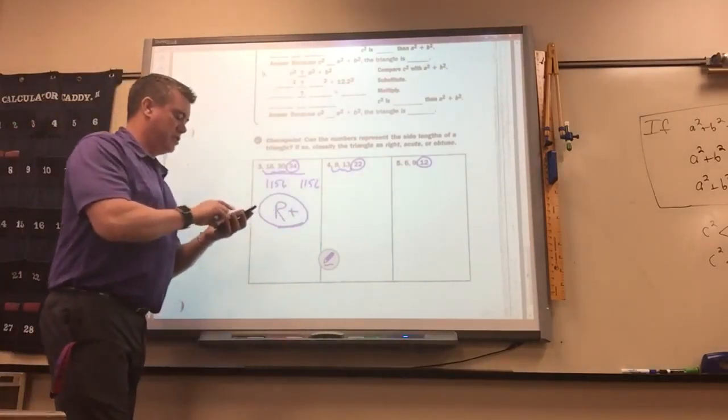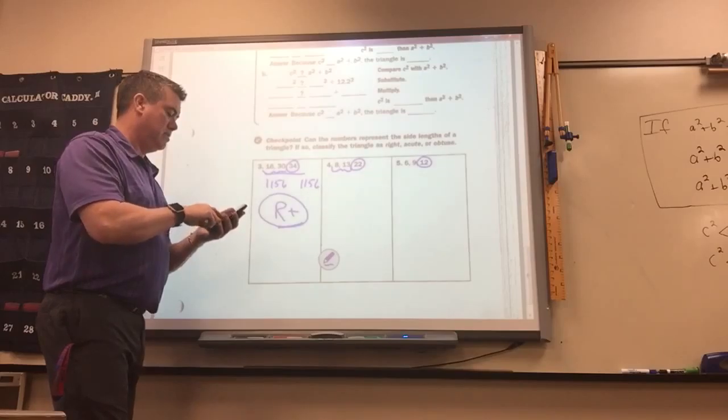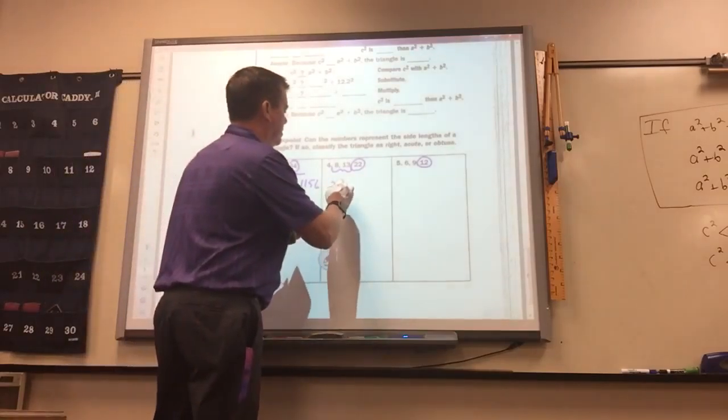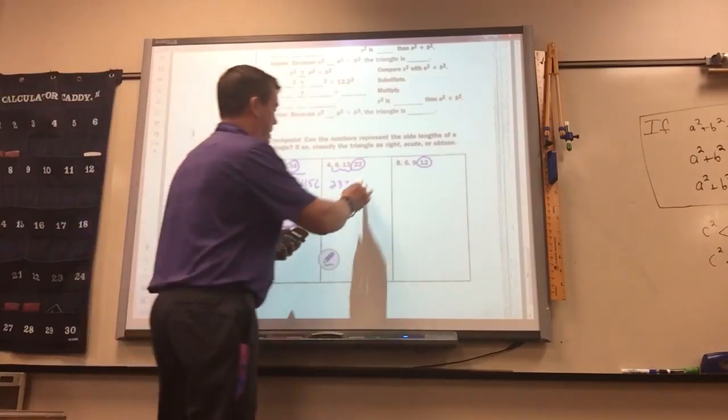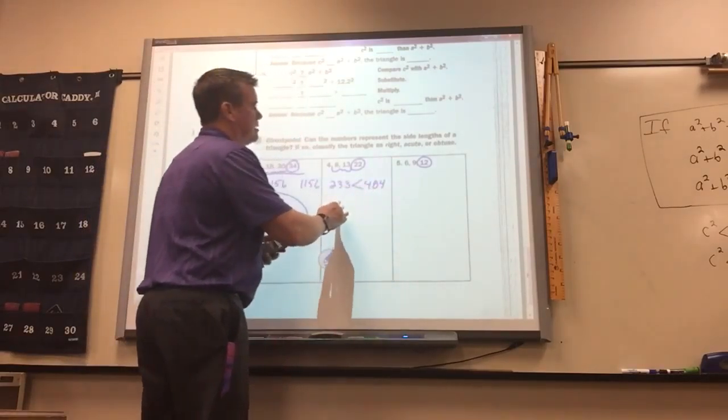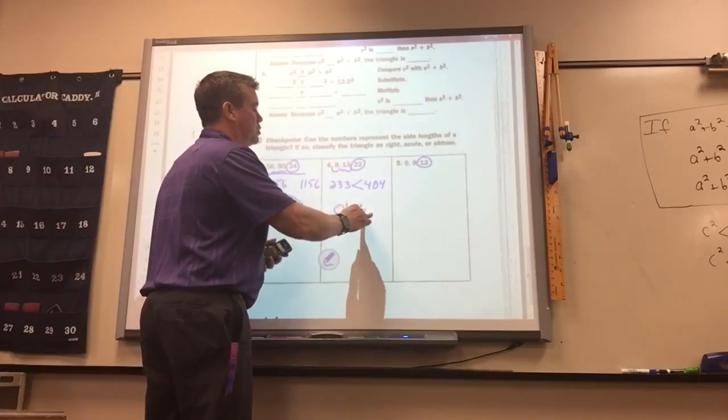8 squared plus 13 squared is 233. 22 squared is way more than that, 484. So it's less than, which is obtuse.